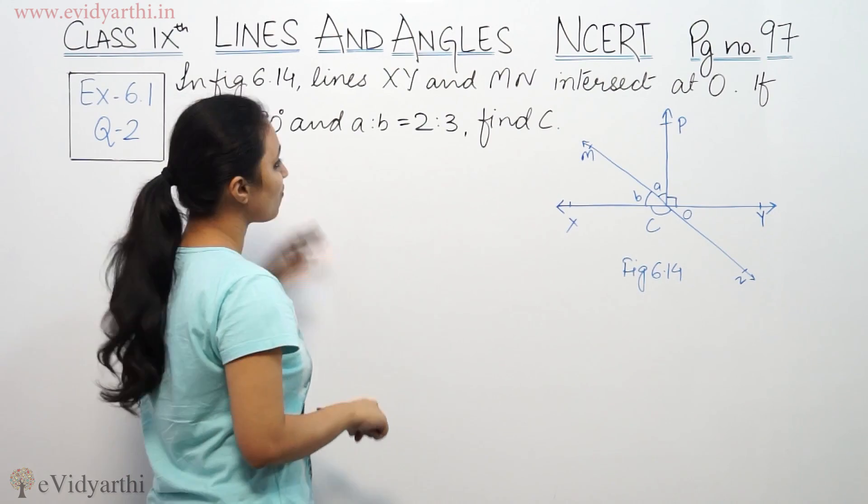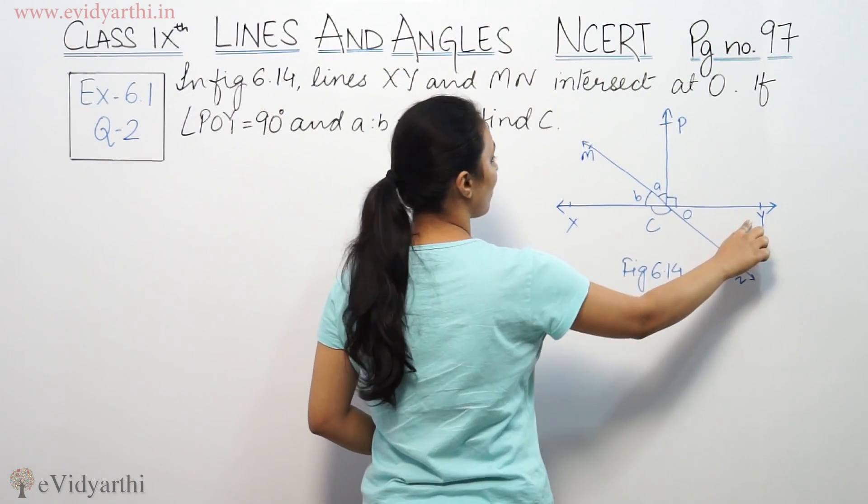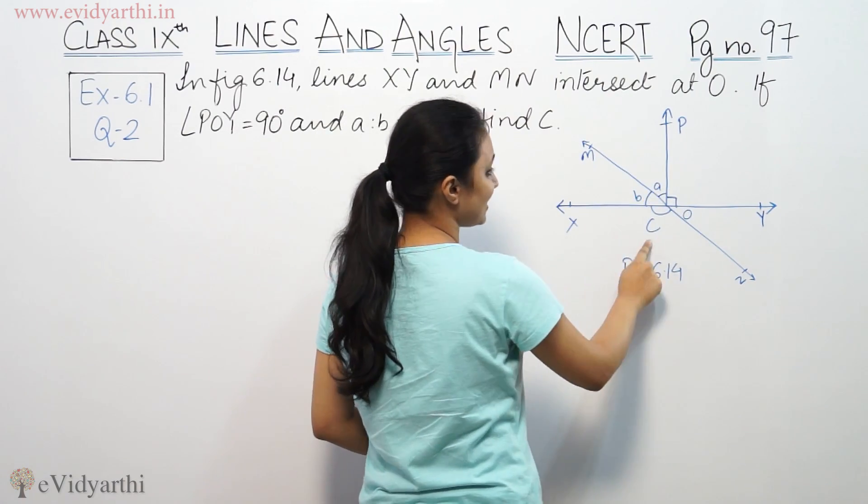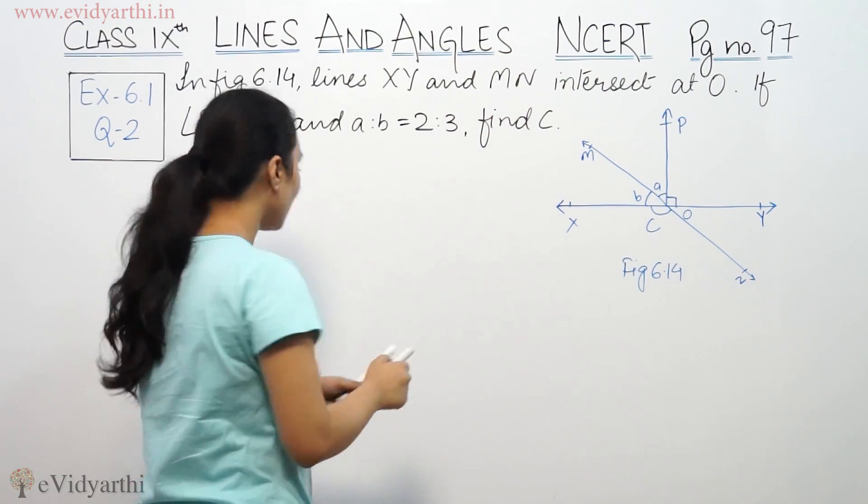If angle POY is 90 degrees and ratio a to b is 2 to 3, then find c. Now we need to find angle c.